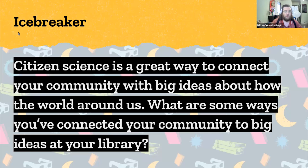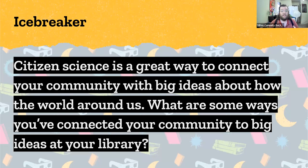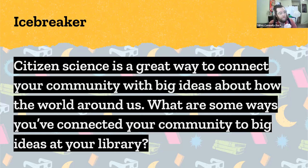I thought I'd start with an icebreaker. Citizen science is a great way to connect your community with big ideas about the world around us. Considering we're going to have two total eclipses about six months apart, visible anywhere in the US, that's a great way to tie citizen science together with eclipse events at your library. What are some ways you've connected your community to big ideas at your library — doesn't necessarily have to be STEM?